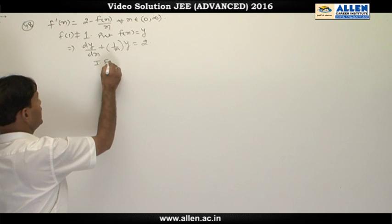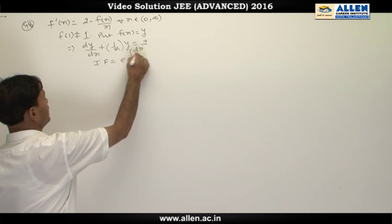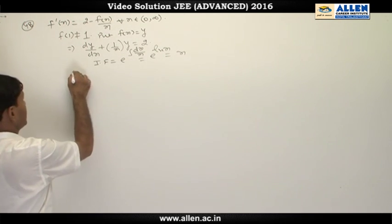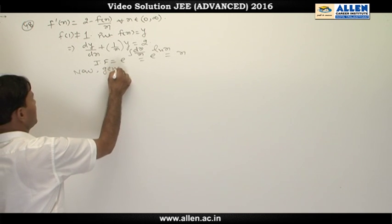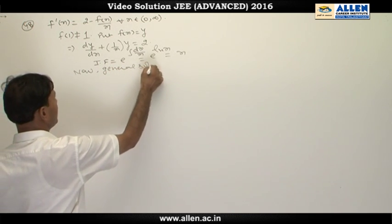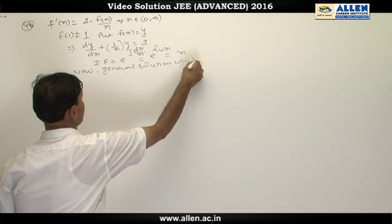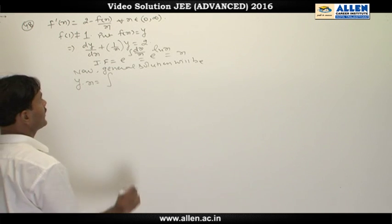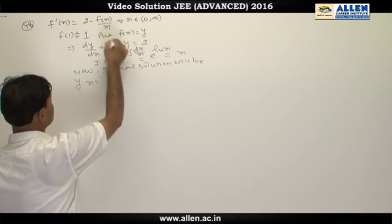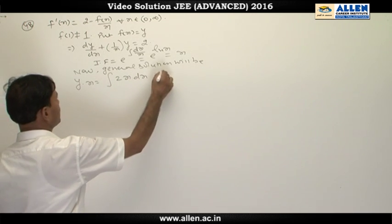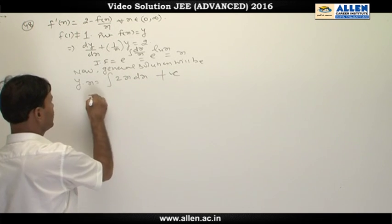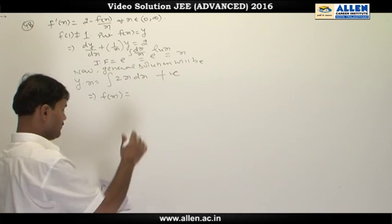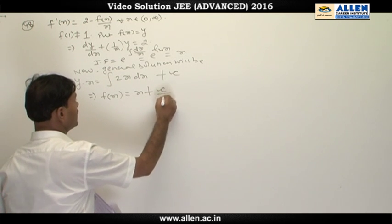Let us first find the integrating factor, which is equal to x. The general solution will be y multiplied by the integrating factor equals the integral of 2 multiplied by the integrating factor, plus a constant of integration. From this we can find f(x) = x + c/x.